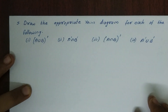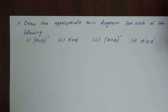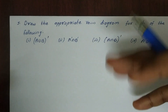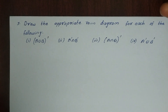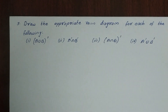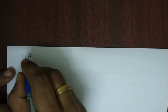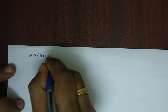Another question: draw the appropriate Venn diagram for each of the following. I can explain the Venn diagram — the intersection, the difference — and adjust to all of them. A intersection B intersection C.